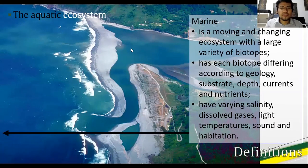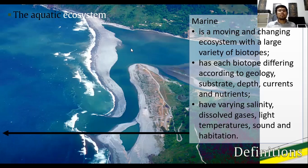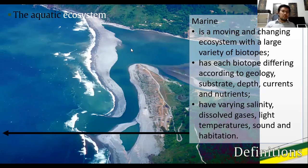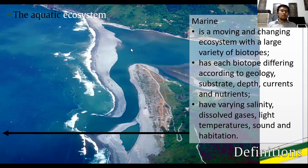The marine ecosystem encompasses oceans and seas — moving and changing ecosystems with a large variety of biotopes. A biotope is a region of habitat associated with a particular ecological community. The habitat is an area of uniform environmental conditions providing a living space for a specific assemblage of plants and animals. Each biotope differs according to geology, substrate, depth, currents, and nutrients. Thus, a marine ecosystem would have varying salinity, dissolved gases, light, temperatures, sound, and habitation. The arrow points to where the marine ecosystem begins and expands further into the open ocean.